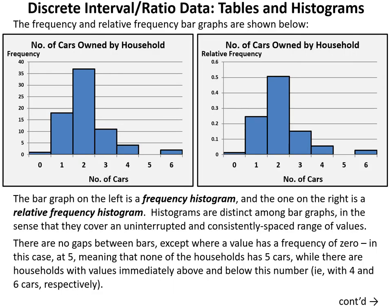The frequency and relative frequency bar graphs are shown separately — a frequency histogram on the left and a relative frequency histogram on the right. Histograms are distinct among bar graphs: they cover an uninterrupted and consistently spaced range of values, inherent to interval and ratio data. There are no gaps between bars except where a value has a frequency of 0 — in this case the value 5, meaning no household owns exactly five cars, even though bars appear on either side.